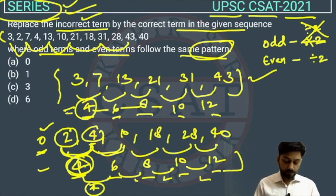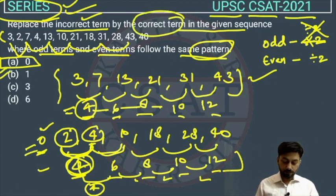Because we have to find the correct term, the correct term will be 0. In place of 2, what will come? 0. So the answer is option A.